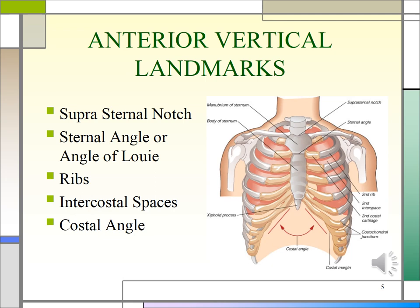The right and left costal margins meet at the xiphoid process and form an angle called the costal angle. Don't confuse this with the costovertebral angle in the back. The costal angle is usually 90 degrees or less. This angle increases when the ribcage is chronically overinflated, as in emphysema, and is often referred to as a flattened costal angle. You will typically note an increased AP to transverse ratio, also called a barrel chest.